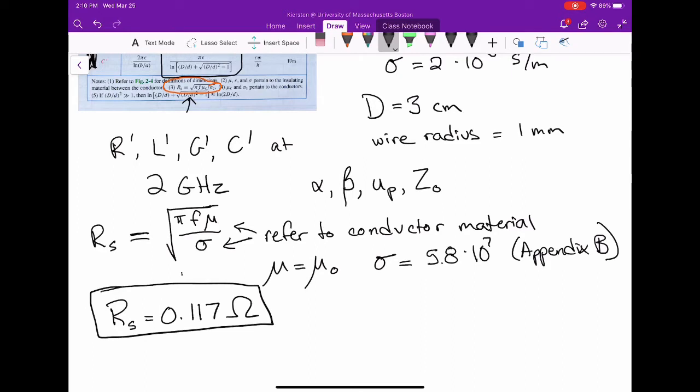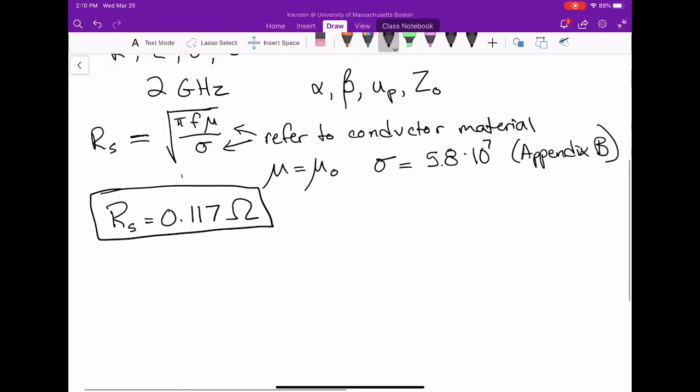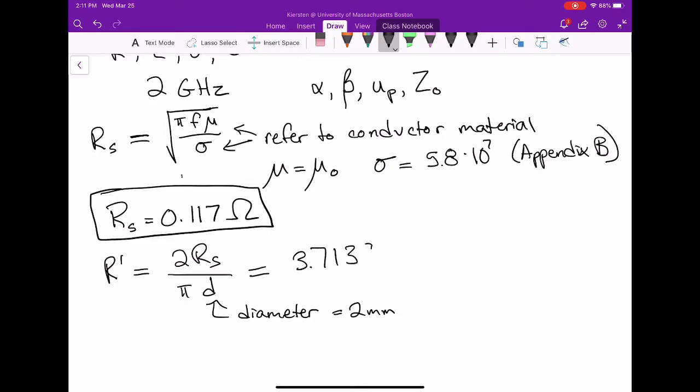R' from the table is 2Rs divided by π times d, where d is the diameter of the wires, which is 2 millimeters. Putting all that in, I get 3.71 ohms per meter, so that's my per unit length resistance.